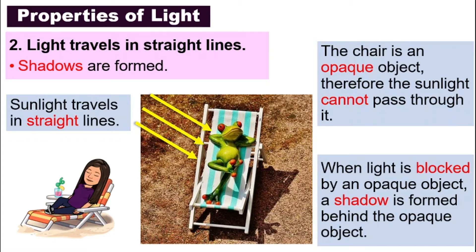In this picture, it is the frog and the chair. Because light cannot shine through, this part is darker compared to other parts, and hence shadows are formed.